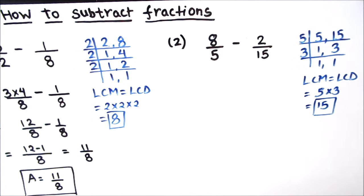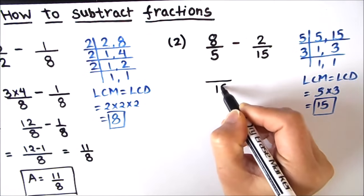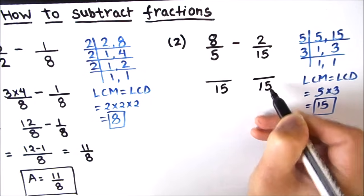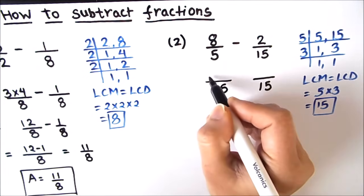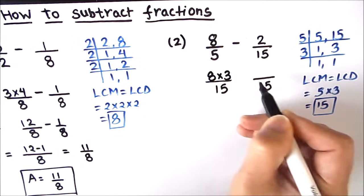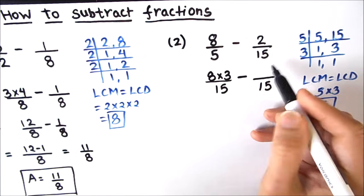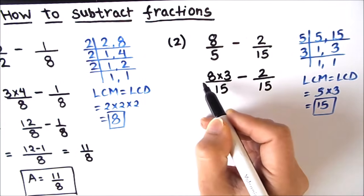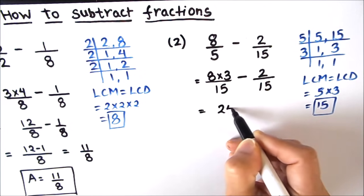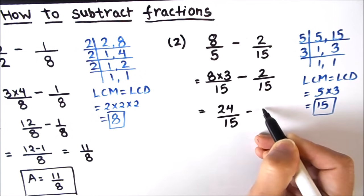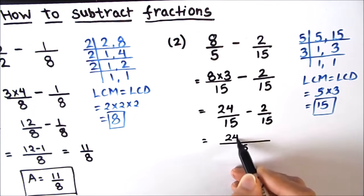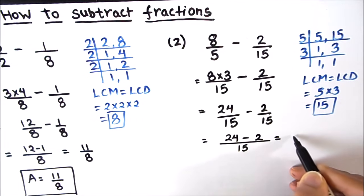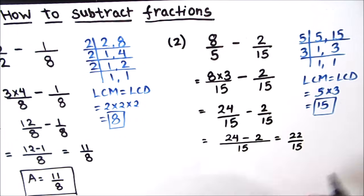Now we have our common denominator. We make the denominators of both fractions equal to 15. From 5 we get 15 because 5 times 3 is 15, so we multiply the numerator 8 by 3. For the second fraction the denominator is already 15, so the numerator stays as 2. So we get 24 upon 15 minus 2 upon 15, and our common denominator is 15. The numerator is 24 minus 2, which equals 22 upon 15. Our final answer is 22 upon 15.